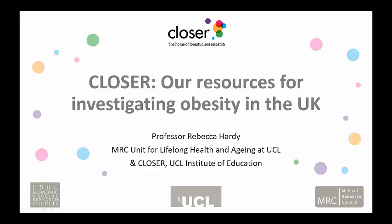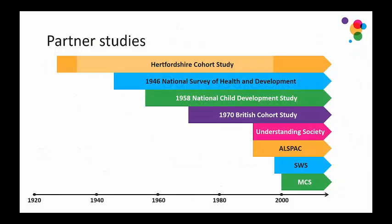The aim of CLOSER is to maximize the use, value and impact of the UK's longitudinal studies. I'll talk specifically about CLOSER resources for investigating obesity rather than study-specific resources. CLOSER has eight partner studies: the four national British birth cohorts born in 1946, 1958, 1970, and 2000-2001 — that's the Millennium Cohort Study — at the bottom of this figure.